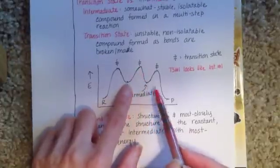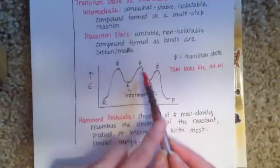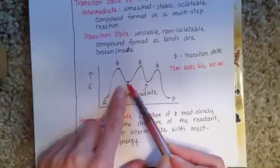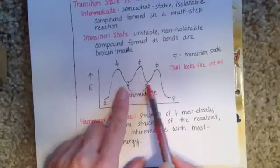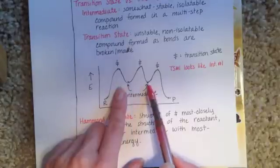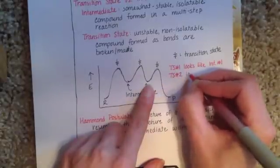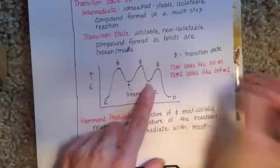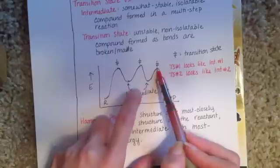For transition state number two, it's going to resemble both intermediate one and intermediate two, because it represents the molecule as it changes from intermediate one to intermediate two. On the diagram they appear roughly equal in energy, but intermediate one looks to be a little bit higher in energy than intermediate two, so transition state number two looks more like intermediate number one. The last transition state is formed as we go from intermediate two to the product.